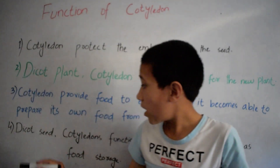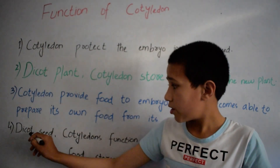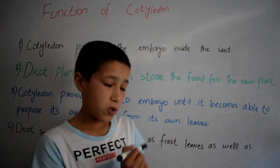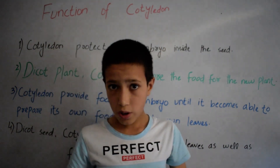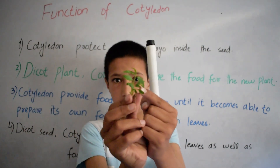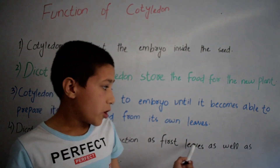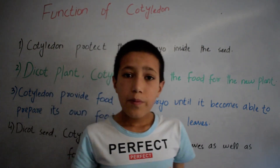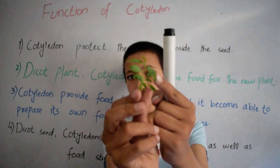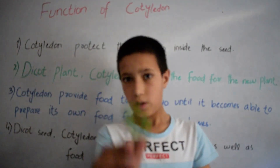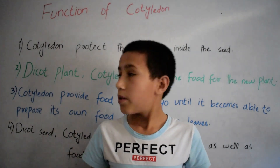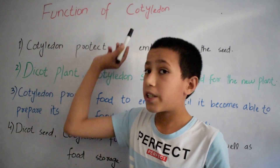The last function of cotyledon is that it acts as the first leaves of the plant. These first leaves serve as food storage. So this was all about the function of cotyledon.